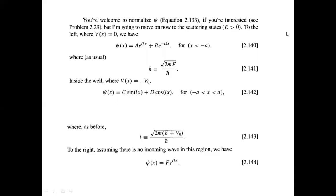Now we're going to move on to the scattering states, where the energy of the particle is greater than zero. We have to solve in three regions where V(x) equals zero. In the region x less than minus a we have these solutions, and in between minus a and a the potential has depth V-naught, giving a general solution of this form.